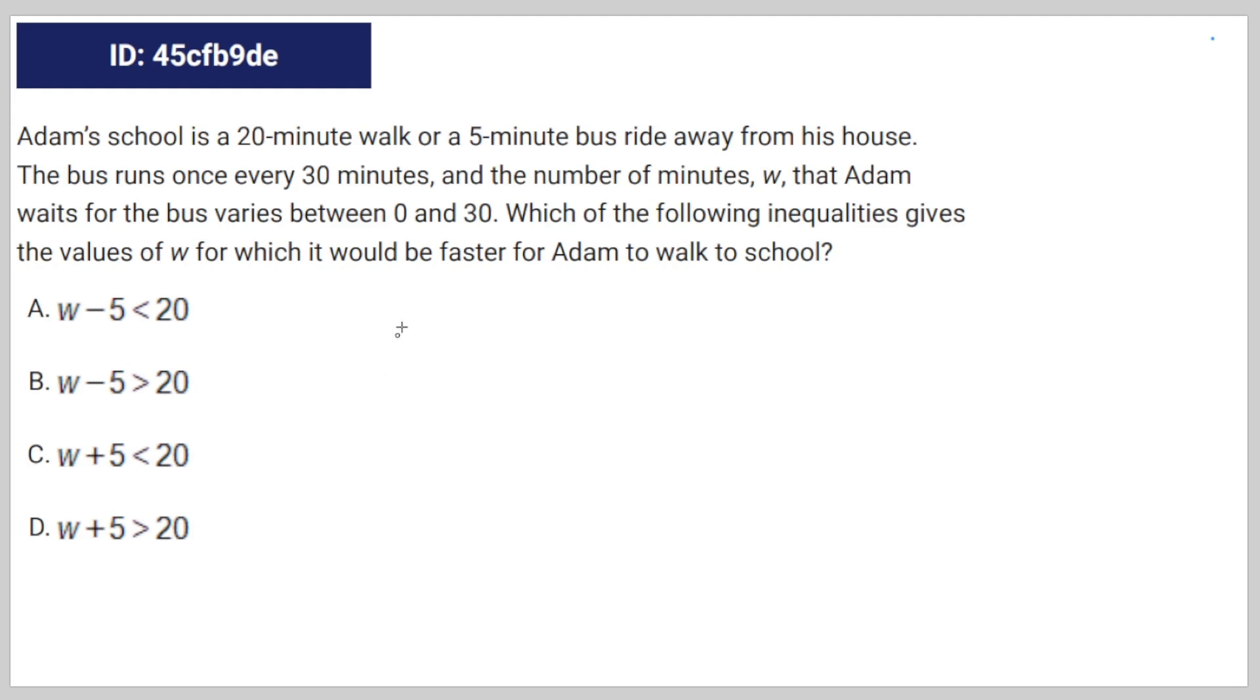We have this algebra question. Adam's school is a 20-minute walk, or a 5-minute bus ride, away from his house. The bus runs once every 30 minutes, and the number of minutes, W, that Adam waits for the bus varies between 0 and 30. So it's a variable. Which of the following inequalities gives the value of W, which would be faster for Adam to walk to school?